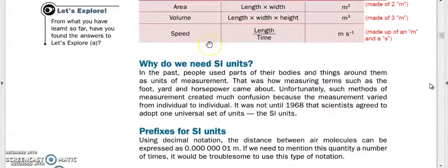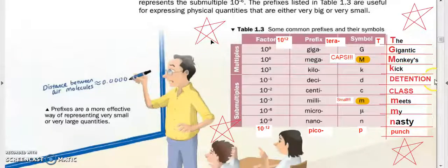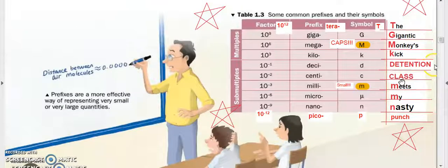Coming to prefixes. We went through in a previous video how we got this - do you remember? It's basically 'the gigantic monkey's kick meets my nasty punch.' Try to write this down. You can see here there's a pattern of three, six, nine, twelve for the gigantic monkey, and meeting your nasty punch is minus three, minus six, minus nine, minus twelve. In the middle, we give you a detention class for fighting. Check out my previous video if you need more recap on this.